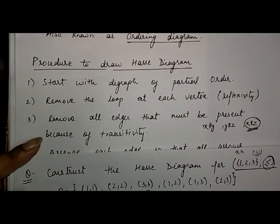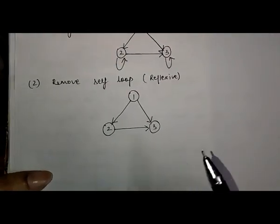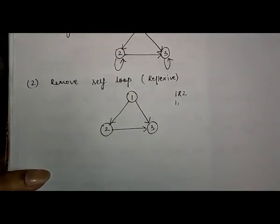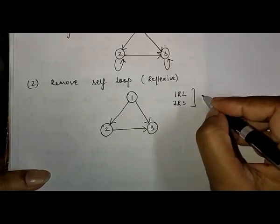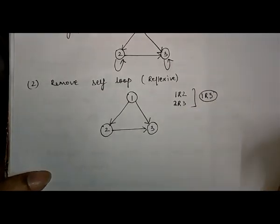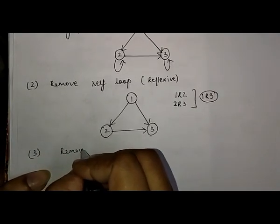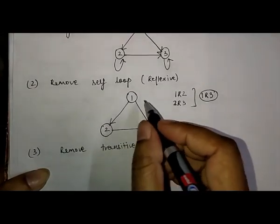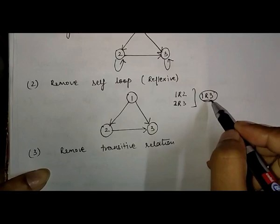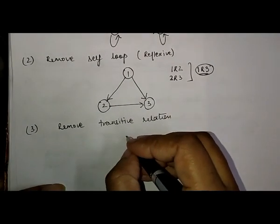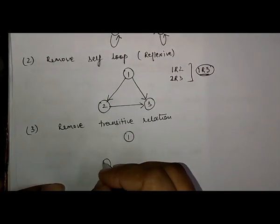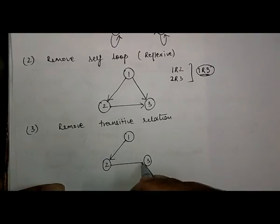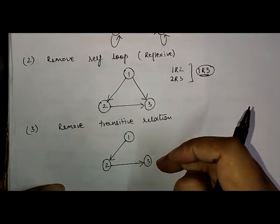The third step is to remove all edges present because of transitivity. Since 1 is related to 2 and 2 is related to 3, this gives 1 related to 3. So I have to remove the edge (1,3). After removing the transitive relation, the graph has edge 1→2 and edge 2→3 remaining, and the edge 1→3 is deleted because it gives the transitive property.